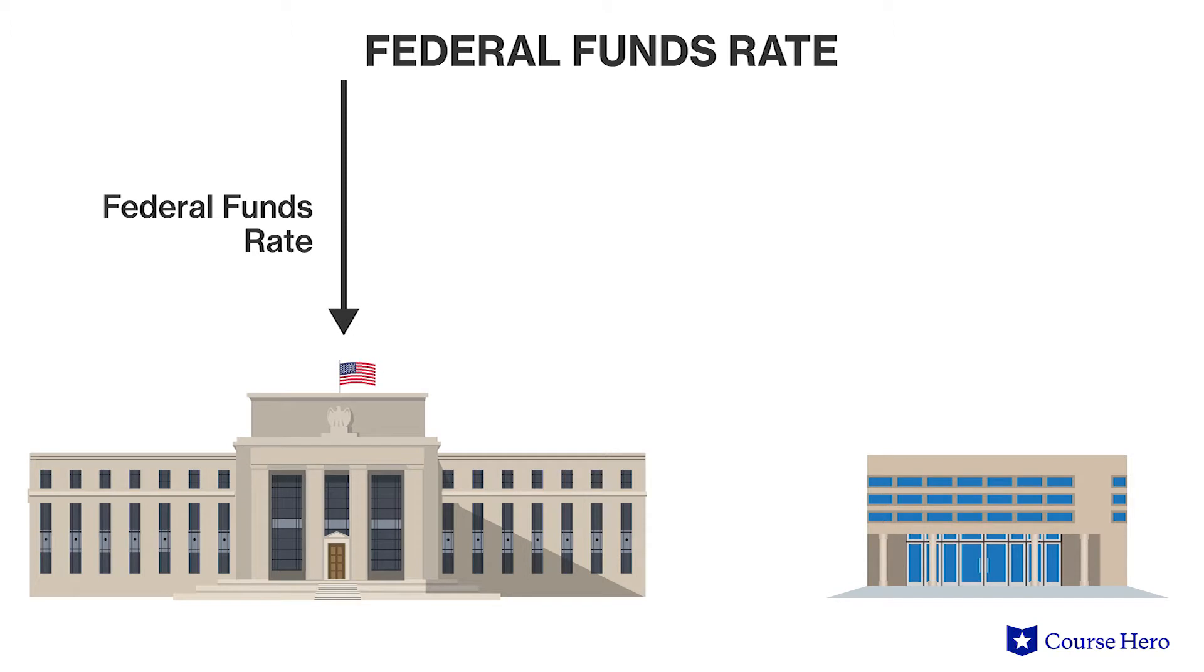The Federal Reserve uses open market operations to target the federal funds rate. By purchasing securities, the Federal Reserve increases the cash available to commercial banks. This will lower the federal funds rate because banks' excess reserves will be higher, and thus fewer banks will need to borrow.